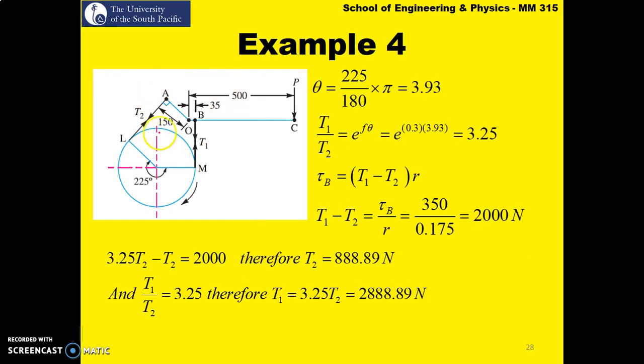So the schematic of the band brake will always be given to you. In this case the drum is rotating clockwise. From M the band is attached at O and from L the band is attached at A. So as the drum rotates clockwise you'll see that this band is pulled. So this is your tight side and naturally the other one becomes your slack side.